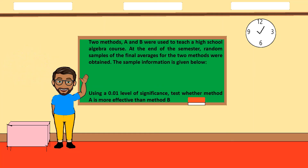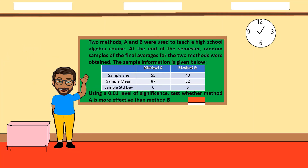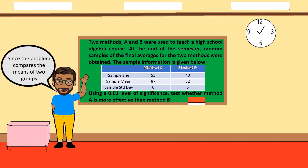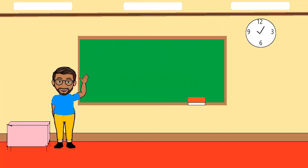Example 3: Two methods, A and B, were used to teach a high school algebra course. Random samples of final averages were obtained: Method A has a sample size of 55, mean of 87, and standard deviation of 6; Method B has a sample size of 40, mean of 82, and standard deviation of 5. At 0.01 level of significance, test whether Method A is more effective than Method B. Since the problem compares the means of two groups and n is greater than 30, the test statistic is the Z-test for two-sample case.